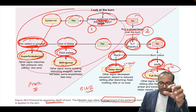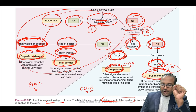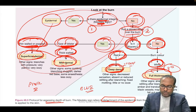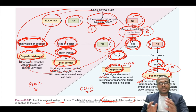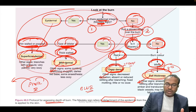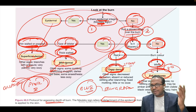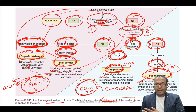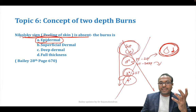Burns are now divided into two categories — pink and blue. Pink (epidermal, superficial dermal, mid-dermal) needs no skin grafting — collagen dressing is sufficient and can be managed by a general practitioner. Blue (deep dermal and full thickness) needs skin grafting and requires a plastic surgeon. The old cotton swab and pinprick concept is removed from New Bailey.